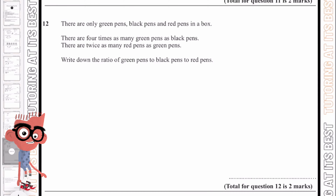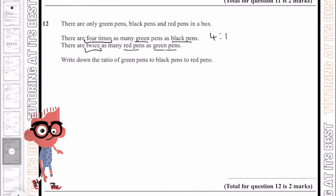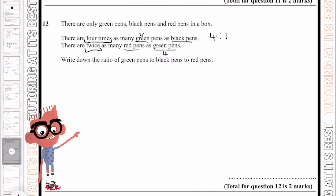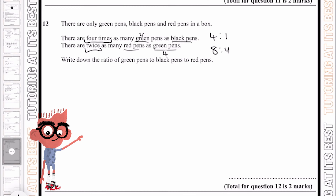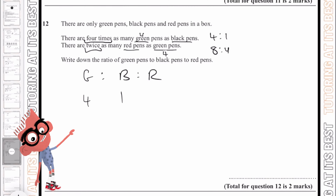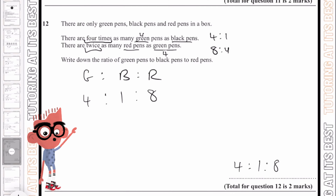Question number 12. There are only green pens, black pens, and red pens in a box. There are 4 times as many green pens as black pens, so green to black is 4 to 1. And there are twice as many red pens as green pens. Since green is 4, twice that means red is 8. Putting it together — green, black, red — gives us 4 to 1 to 8.